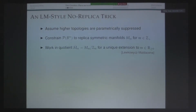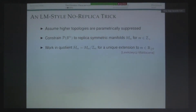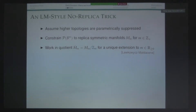When you say replica symmetric — the boundary condition has a full S_M symmetric group symmetry. Are you assuming the saddles have that symmetry or only some cyclic subsymmetry? I'm assuming they only have some cyclic subsymmetry.